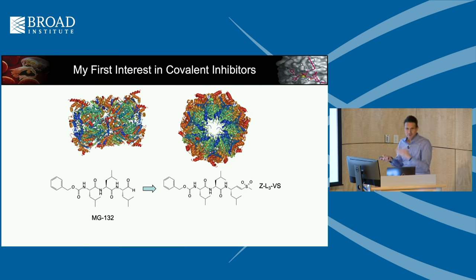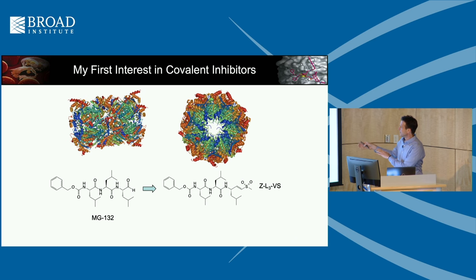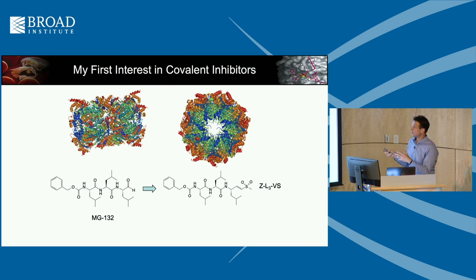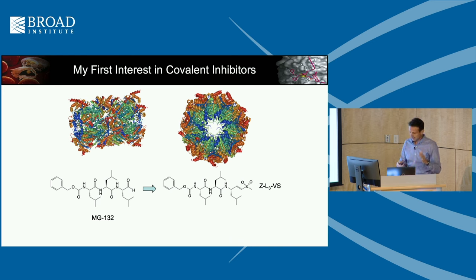I remember telling my friends about this. They said it's not going to work because this is a thionucleophile, not a hydroxyl, and the proteasome uses a threonine in the active site. I said, let's make it anyway — they said I was wasting my time. But I did it. I made the molecule, which we called ZL3VS, which is basically the exact analog of MG132.